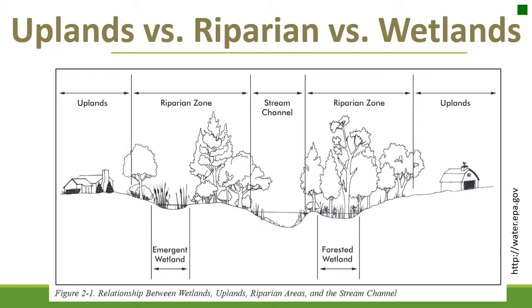The first thing we need to do is differentiate between uplands, riparian areas, and wetlands. The stream channel is the area where the water is actively moving through, such as a creek, a stream, or a river. The areas of land adjacent to that are called riparian areas or riparian zones. Everything at higher elevation where riparian vegetation is not present and moisture in the soil is not as high — those are considered uplands.